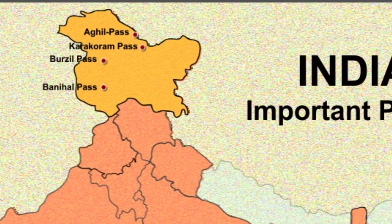A tunnel is constructed under the Banihal Pass known as the Jawahar Tunnel. The road now passes through the tunnel and the Banihal Pass is no longer used for road transport. The pass lies close to the line of control and this route was active up to Pakistan's independence.